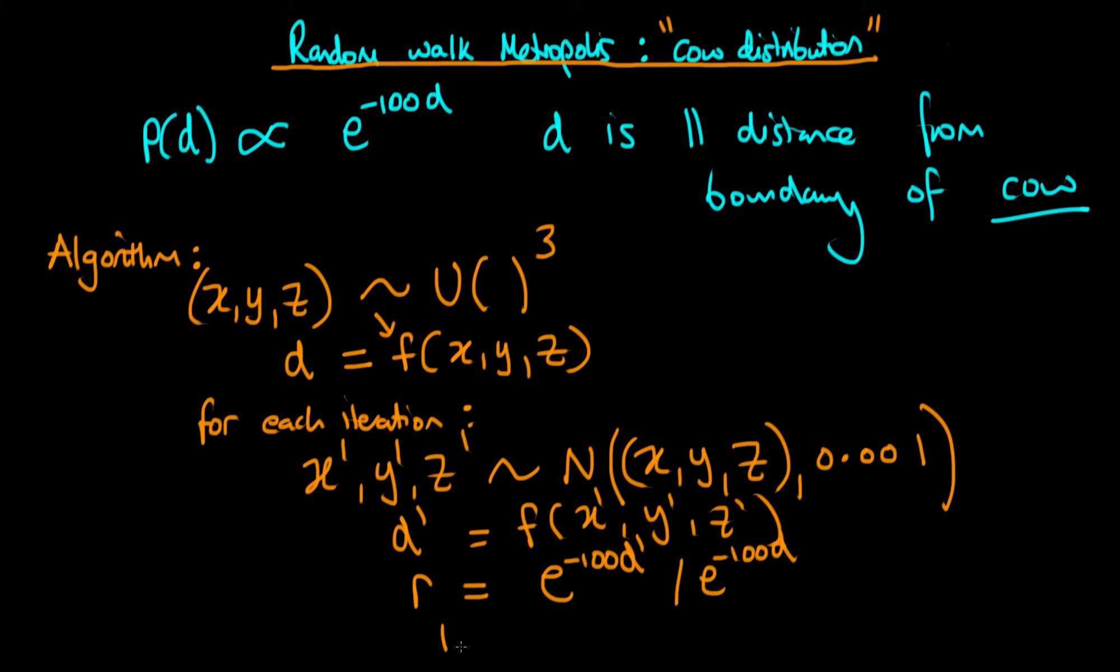And then the idea is that if R is greater than some uniformly distributed number between zero and one, then you move to that new point.